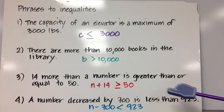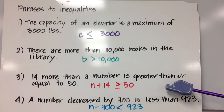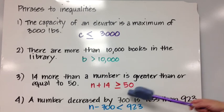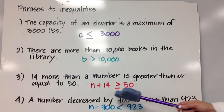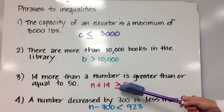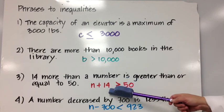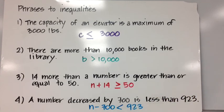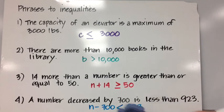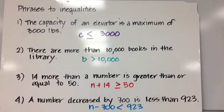14 more than a number is greater than or equal to 50. 'Greater than or equal to' — we know that symbol. '14 more than' means we're adding 14, so: N + 14 ≥ 50. A number decreased by 700 is less than 923. 'Decreased' means subtract, so: N − 700 < 923.